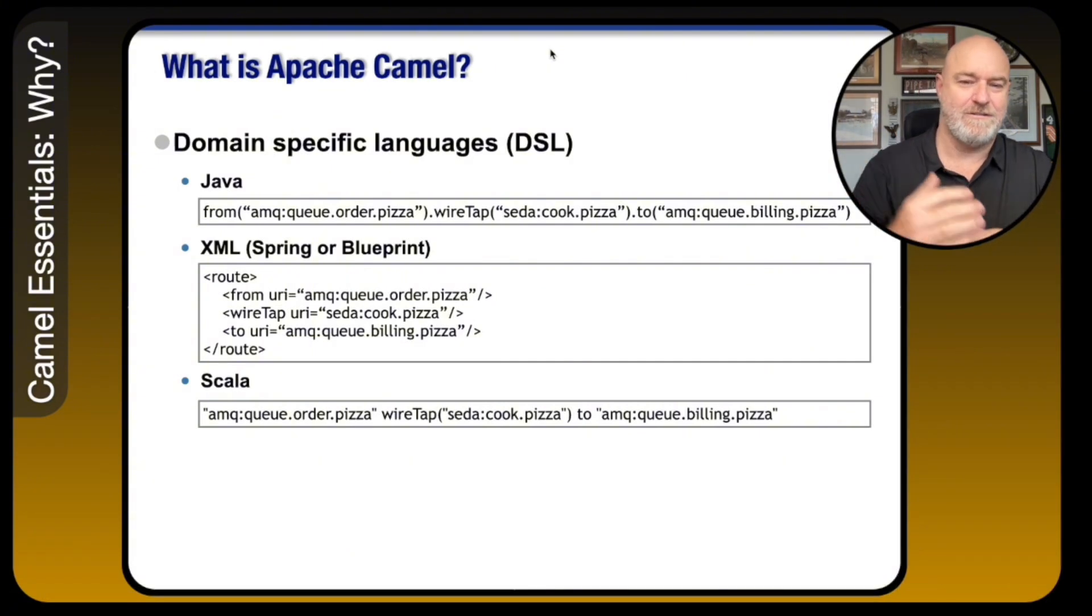Well, here you go. So you've got Java. It starts off with a from, that's your consumer. You're going to get the message from whatever your endpoint. In this case, it's ActiveMQ. We're going to wiretap it. We're going to send it off to another route. In this case, it's say to cook pizza because I love pizza. And then at the same time, I'm going to send that same message off to another queue for billing, let's say. So all of this happens in that one line of code, which is super cool, right?